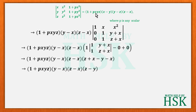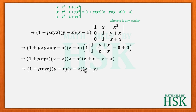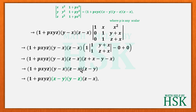This gives (1+pxyz)(y−x)(z−x)(z−y). The required form uses (x−y), (y−z), and (z−x). Taking −1 common from (y−x) gives (x−y), and multiplying into (z−y) gives (y−z). The final result is (1+pxyz)(x−y)(y−z)(z−x), which is what was required to prove. Hence proved.